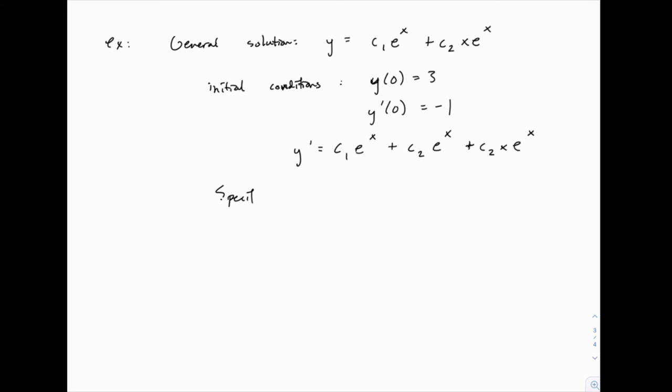So now the specific solution. If we plug in the first initial condition, we'll have 3 equals c1 e to the 0 plus c2 times 0 times e to the 0. Now, of course, that whole second part is just 0, and e to the 0 is just 1.